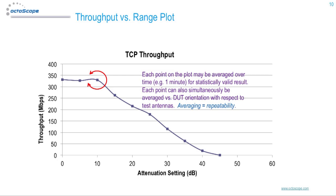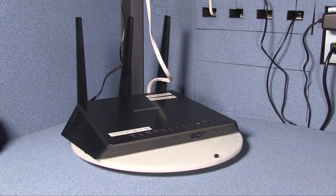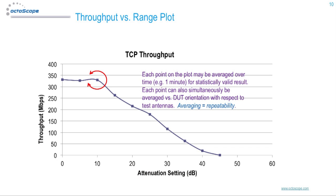This is an example of a throughput versus range plot. Here, rotation can be employed to average throughput versus device orientation. For example, you can specify a 1-minute measurement period with 1 revolution per minute rotation speed, rotating the device over a full revolution during each 1 minute of throughput measurement, allowing you to average throughput versus time versus orientation simultaneously. Averaging versus time, path loss, and orientation is vital because throughput and other wireless metrics are statistical in nature and can be impossible to understand without the right testing environment and equipment.